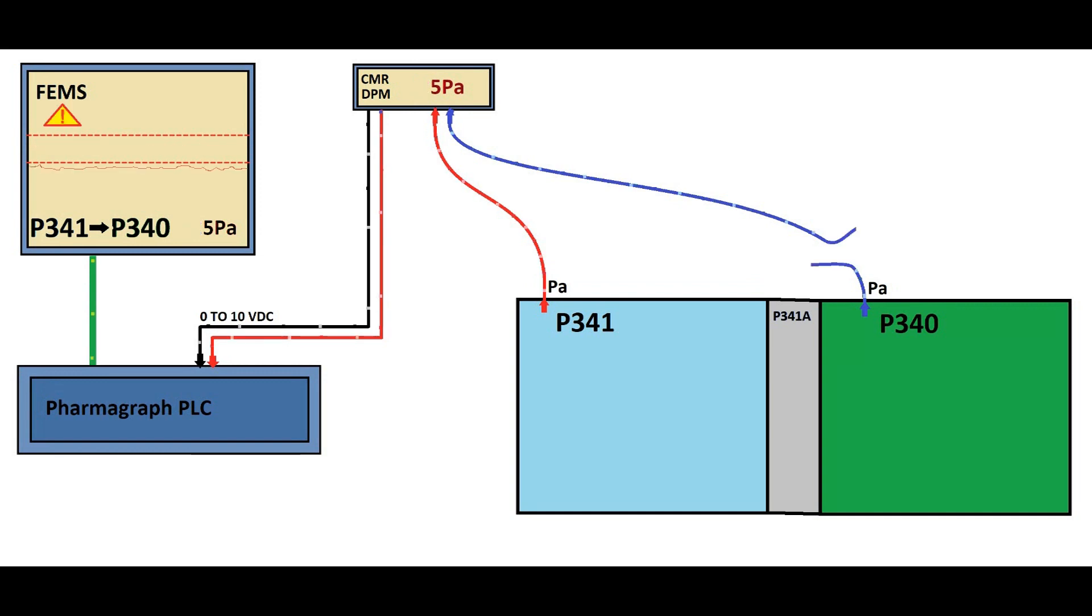In alignment with GMP standards, our protocol is robust when addressing HVAC faults. When a fault triggers an erroneous room pressure deviation due to an environmental monitoring system displaying inaccurate data, the production room supervisor acts promptly following SOP guidelines.